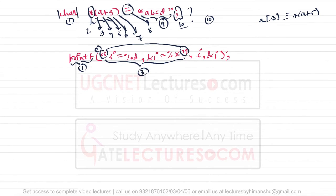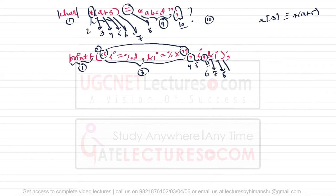Then the comma is the fourth token, 'i' is the fifth token, the ampersand sign is the seventh token, 'i' is the eighth token, and the remaining elements are the ninth and tenth tokens. So in this entire program there are ten tokens.